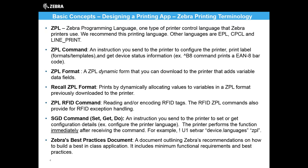Another command set we commonly use is the SGD command, or Set Get Do. These commands are used only for printer configuration — things like setting up wireless access, Bluetooth, print speed, and the actual control language. These are used either during initial printer setup or in the initial stages of your application, to make sure the printer you're talking to will handle data the same way as others, so all printers work essentially the same out of the box. The best practices document online covers our recommendations in detail.